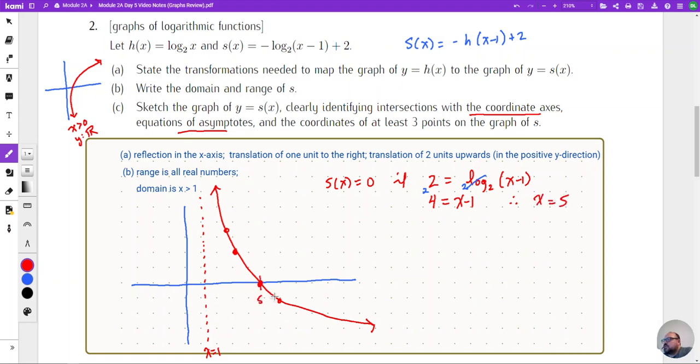All right so therefore we know that x needs to be equal to five, so one of the points on the graph of s is the point five comma zero.